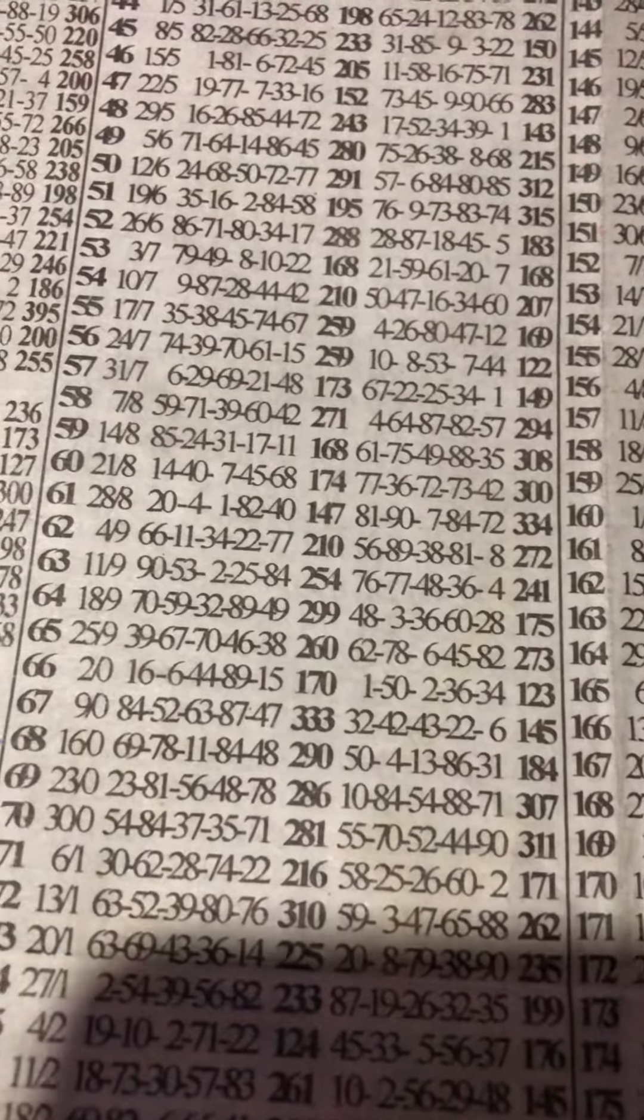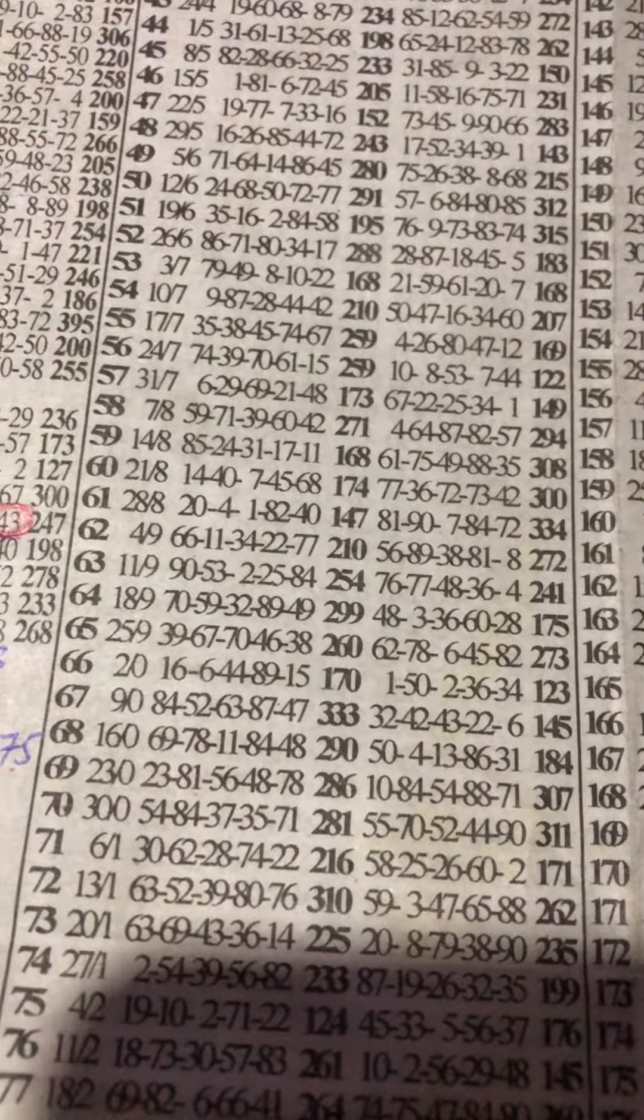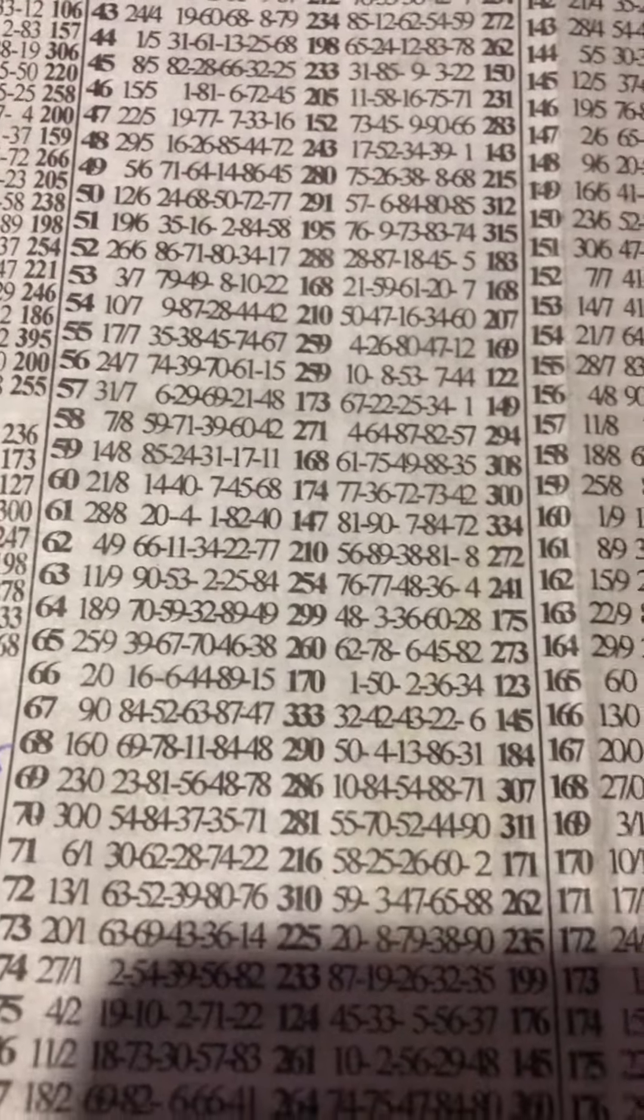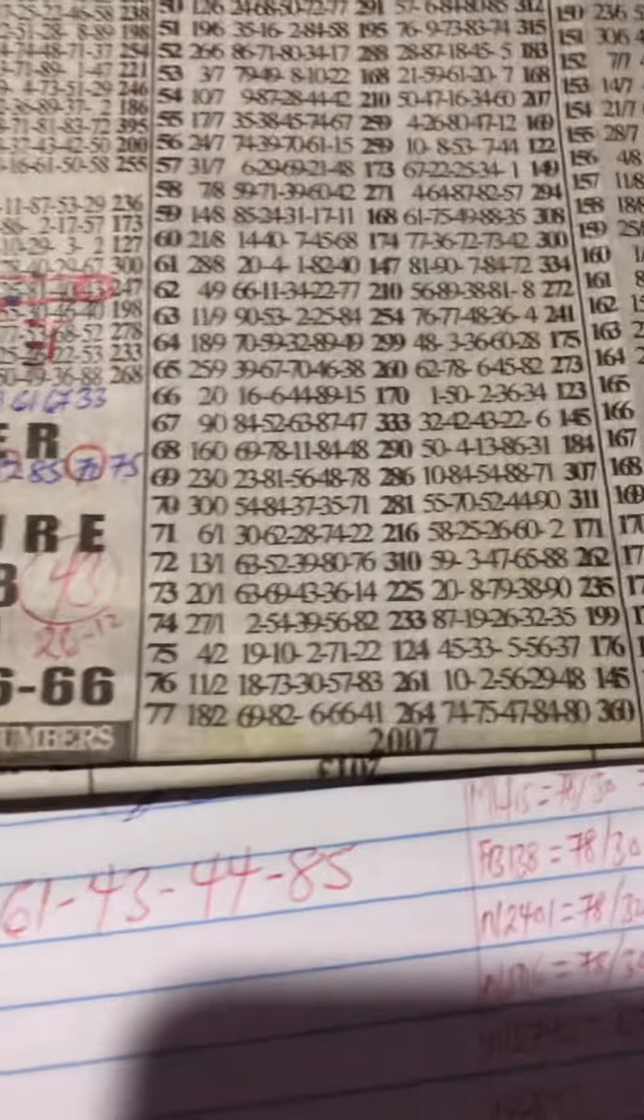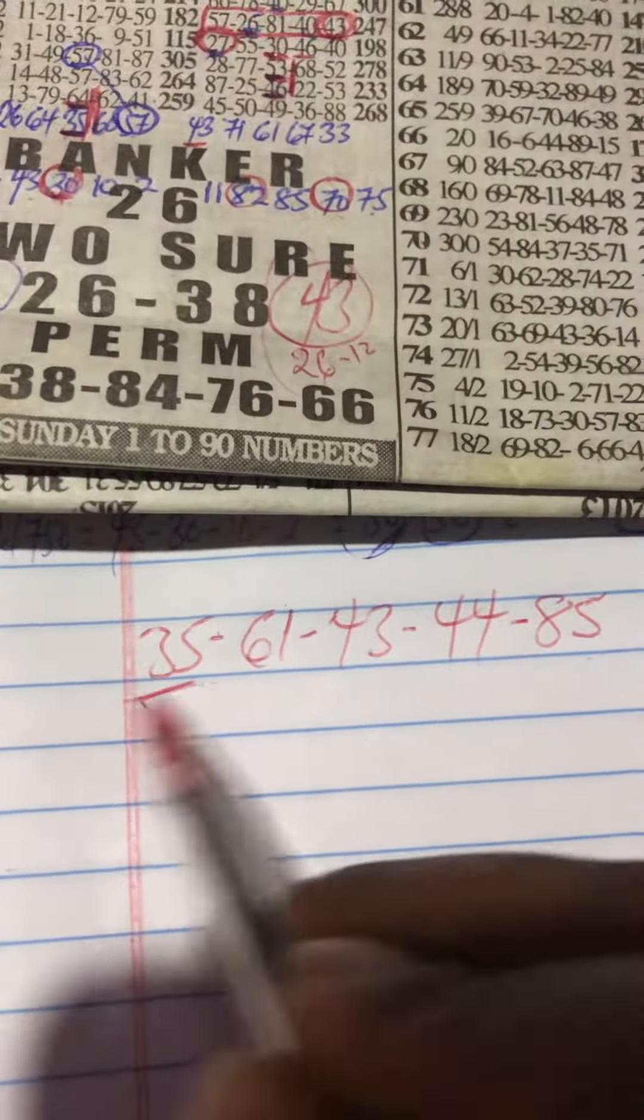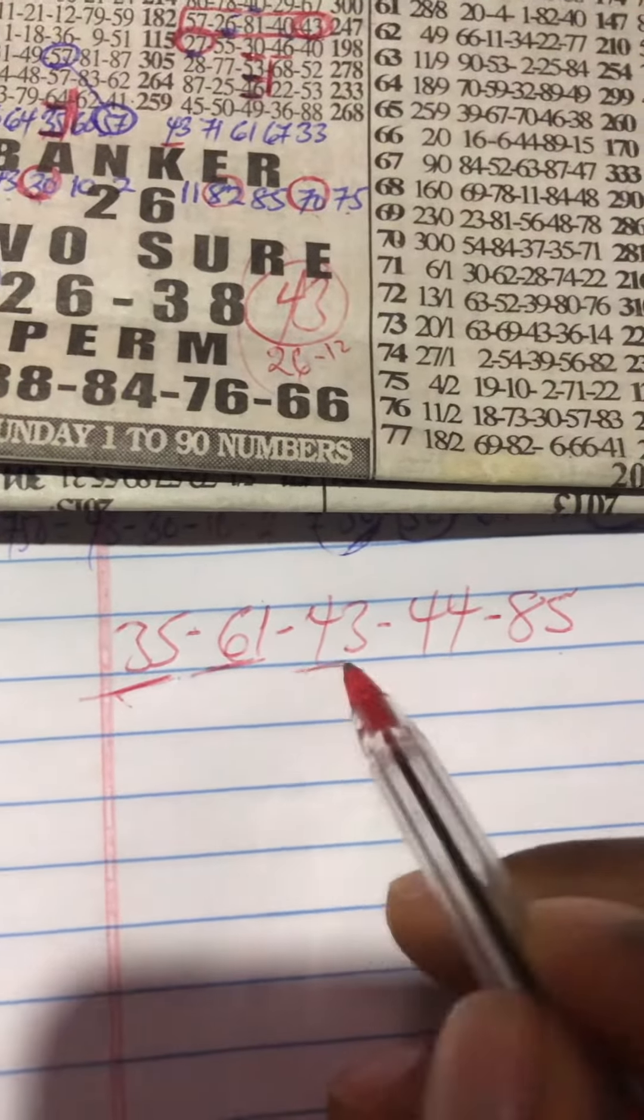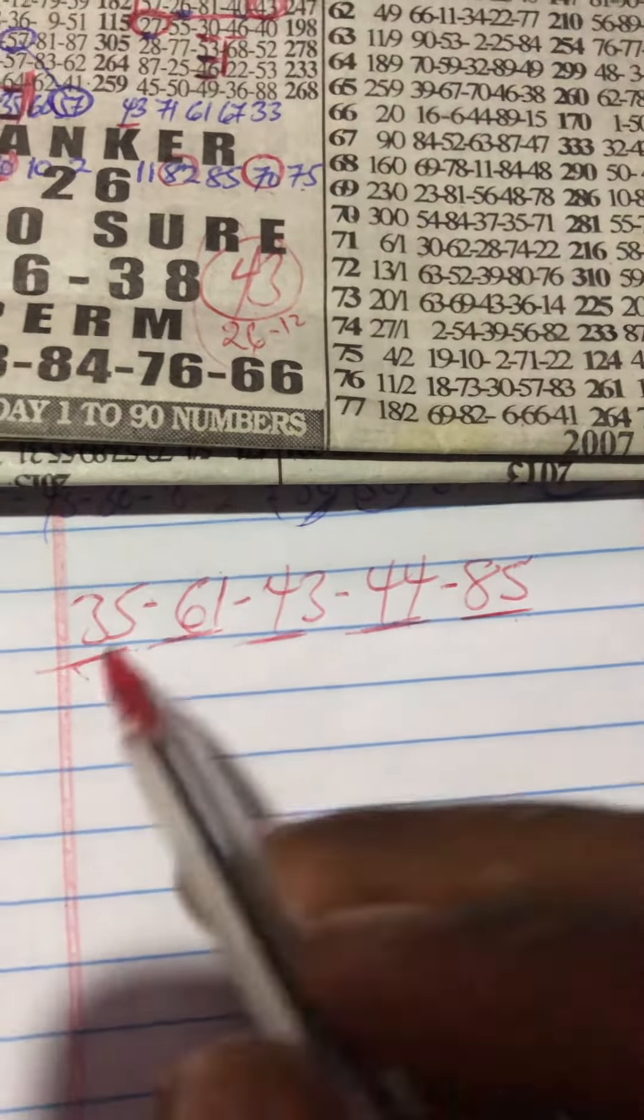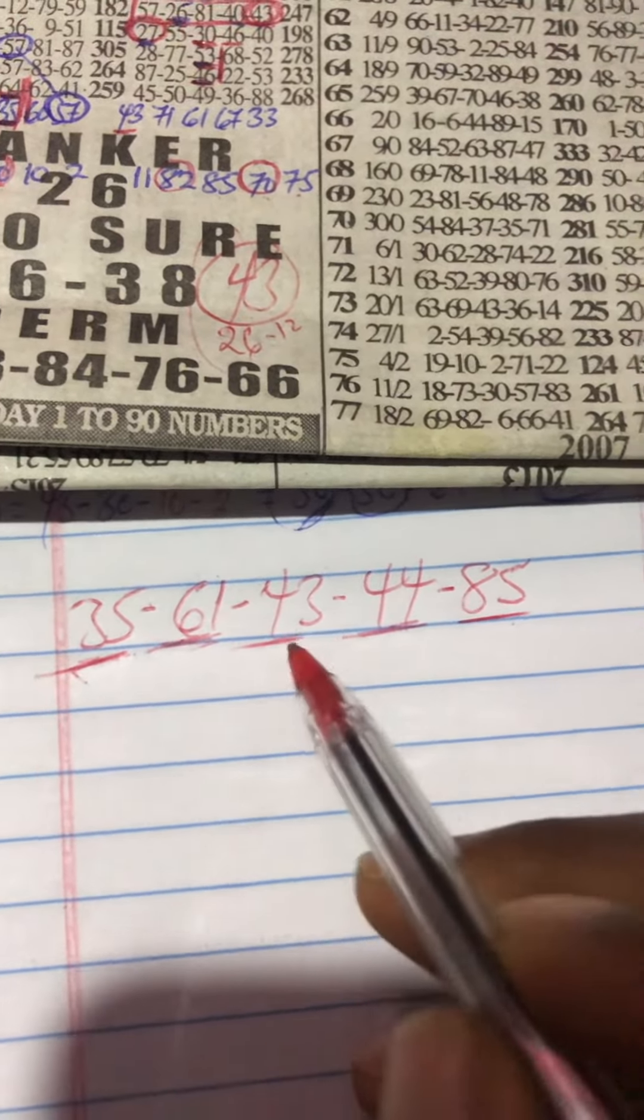Okay, this romantic day is the result for Sunday ASEDA. It has happened again - banker one to billion drop live. So those who carry the banker, all that: 35, 61, 43, 44, 85.